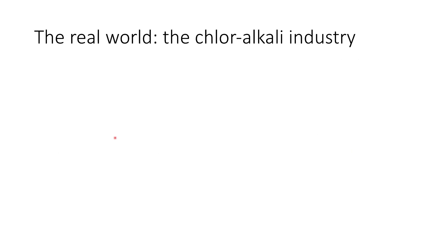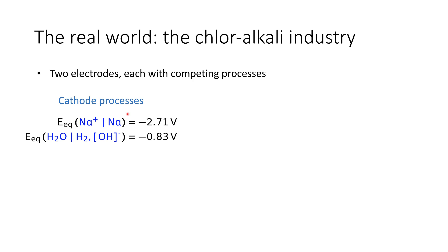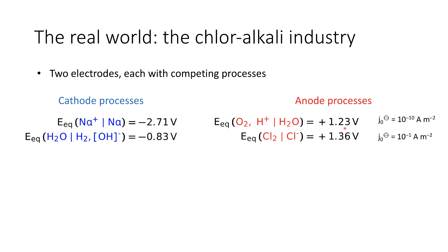An example of this is the chloralkali industry, where we electrolyse sodium chloride solution. We have two electrodes — cathode and anode — each with competing processes. The cathode processes involve either reduction of sodium to sodium metal or reduction of water to hydrogen and hydroxide. There is a huge thermodynamic barrier to overcome to reduce sodium, while the barrier for reducing water is not quite so great. At the anode, the electrode potentials are very similar, so we need to think about kinetics. Thermodynamically, we would expect a lower barrier for oxidation of water to oxygen than for oxidation of chloride to chlorine gas, but the exchange current density for chloride oxidation is considerably greater.